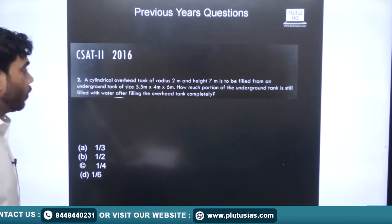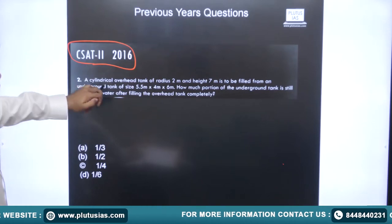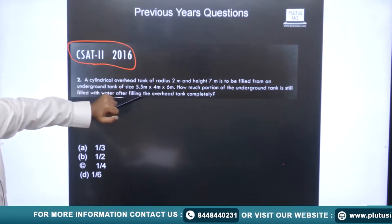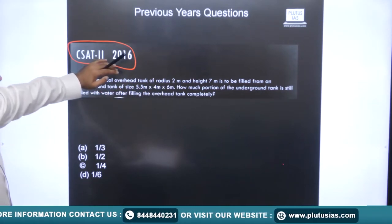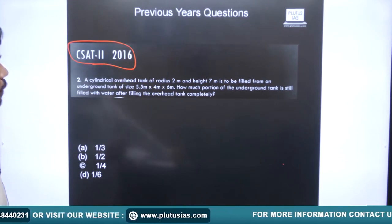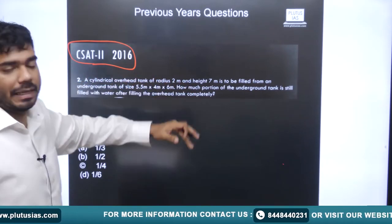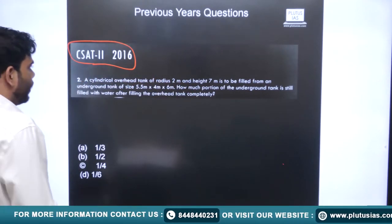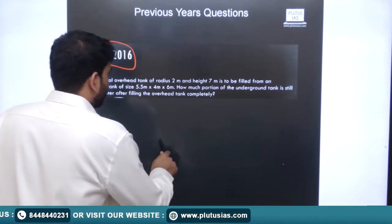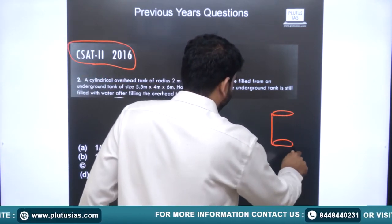The next question was also asked in CSAT 2016. A cylindrical overhead tank of radius 2 m and height 7 m is to be filled from an underground cuboidal tank of size 5.5 × 4 × 6 m. How much portion of the underground tank is still filled with water after filling the overhead tank completely?